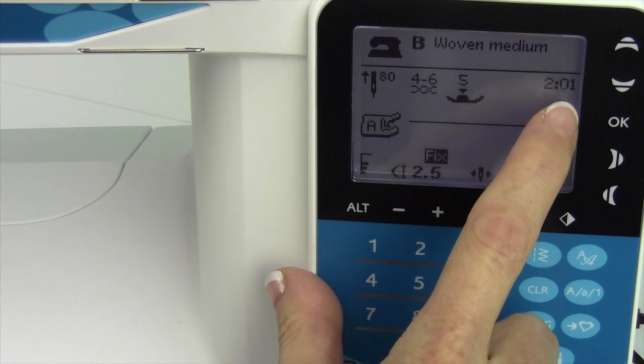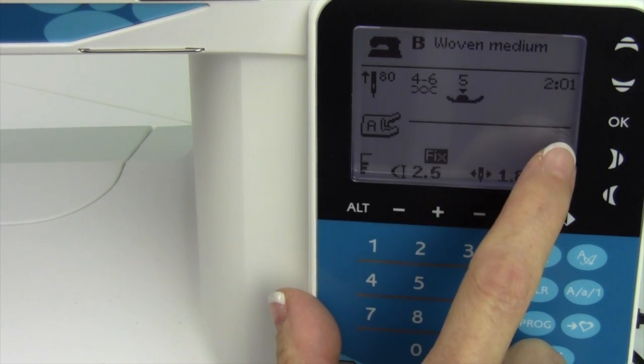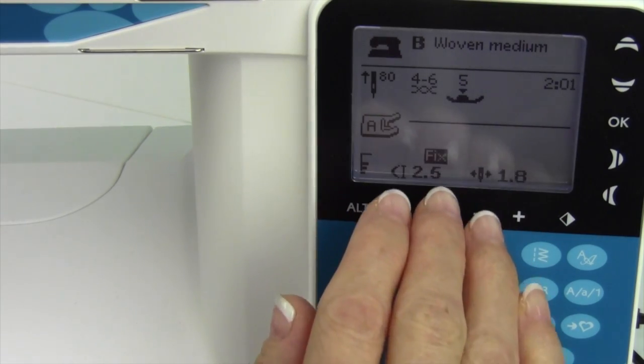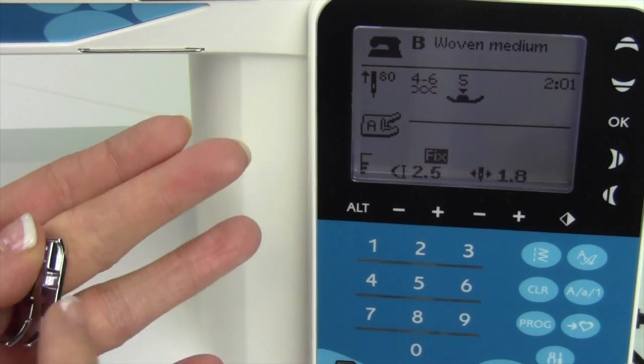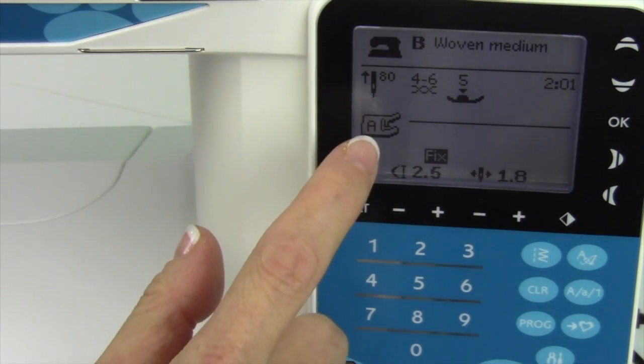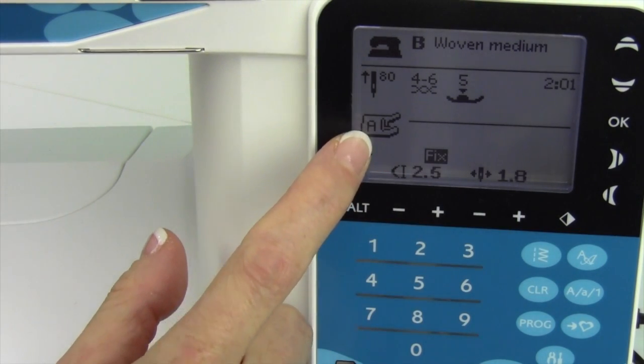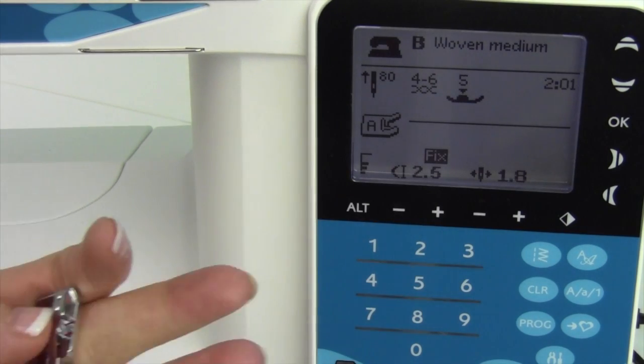We're on row 2, stitch number 1, and what you notice is that the line, a straight stitch, is not in the center anymore. It has actually moved to the right. This is so you can use your regular A foot and the edge of it will be exactly a quarter inch.